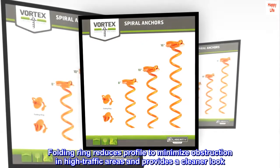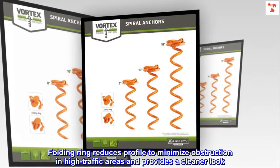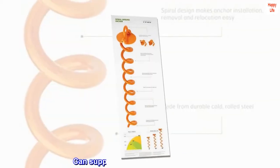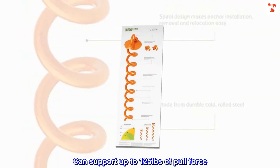Folding ring reduces profile to minimize obstruction in high-traffic areas and provides a cleaner look. Can support up to 125 pounds of pull force.